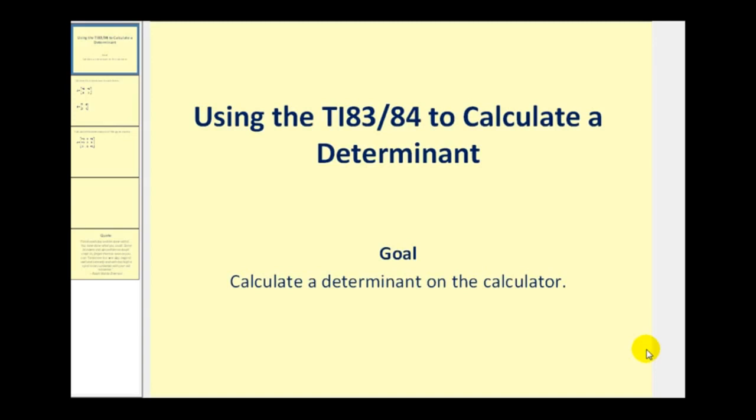Welcome to a video that will show you how to use your TI-83 or 84 to calculate a determinant. There is another video that shows you how to do it by hand, but if you're using determinants to solve a variety of application problems — like the area of a triangle on the coordinate plane or Cramer's rule — it is nice to be able to check your determinants. So let's go ahead and show how you can do this.